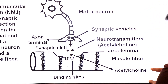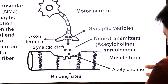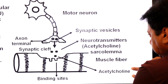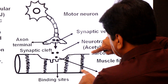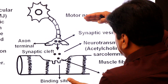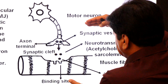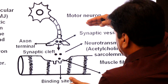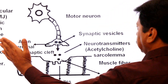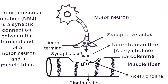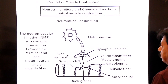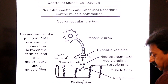Acetylcholine establishes contact with the binding sites on the sarcolemma — the plasma membrane of the muscle cell — at the point of contact at the neuromuscular junction.